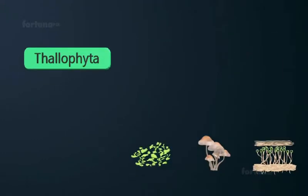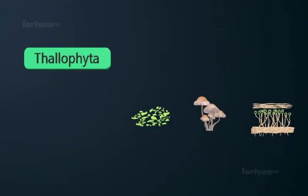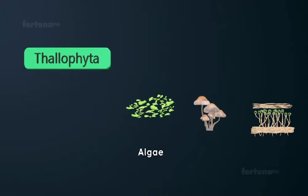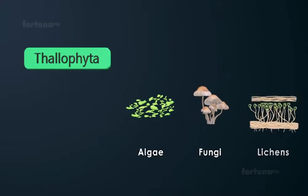Thallophytes are considered the lower plants because they have an undifferentiated mass of cells called thallus. Thallophyta includes the algae, fungi, and lichens.